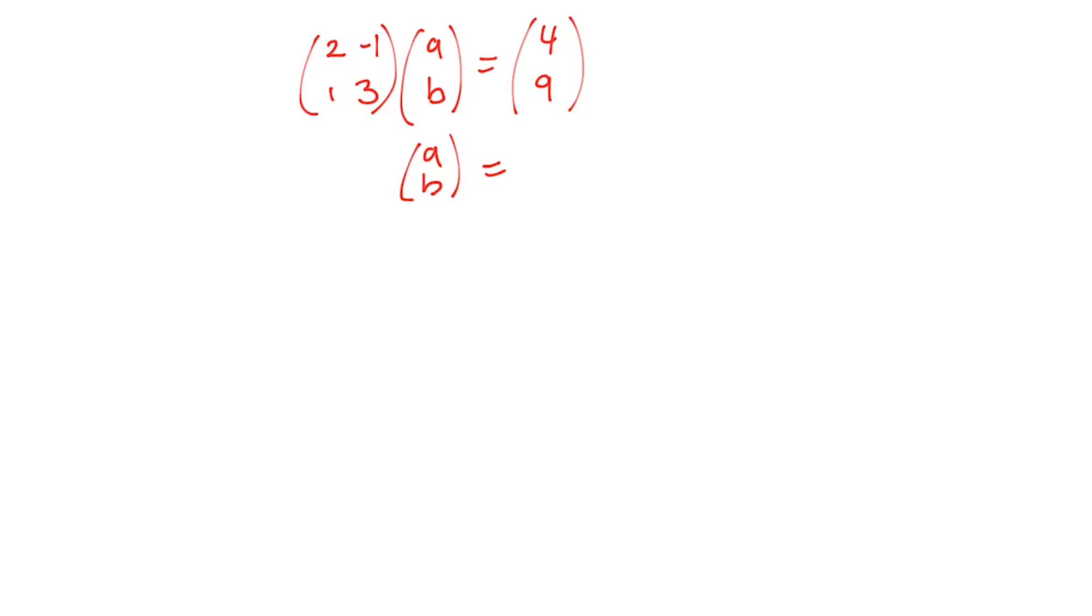So A, B is going to be equal to the inverse of this guy. What's the inverse? We just found it: 3 over 7, 1 over 7, negative 1 over 7, and 2 over 7, times 4, 9. That's this. Remember, when you're bringing across the matrix, it squeezes in on the inside because matrix multiplication is not commutative. You have to make sure you know where you're putting your matrix.